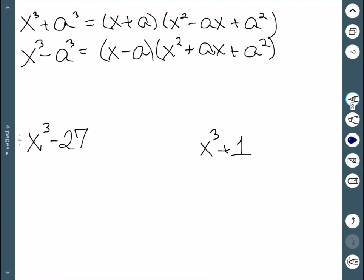Remembering the signs, we can use the acronym SOAP for same, opposite, always positive. The first sign will be the same as the sign in the problem. The second one is the opposite. And then the last is always positive.